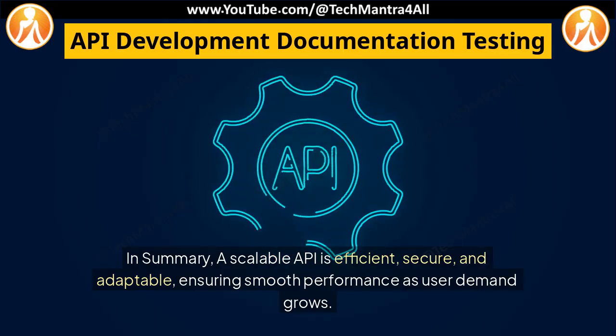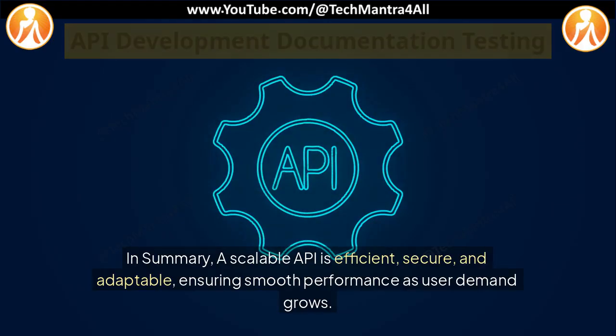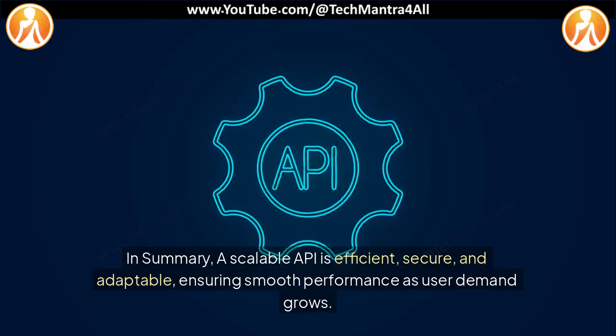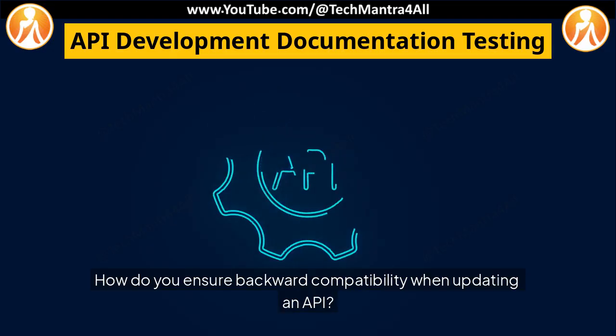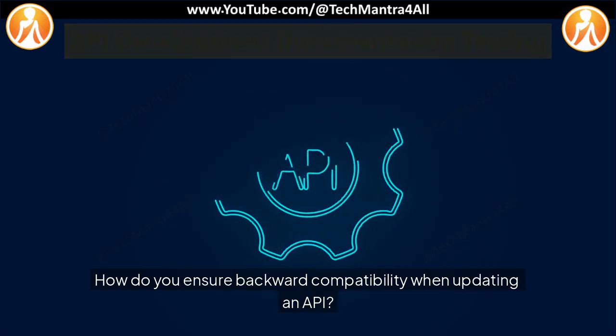In summary, a scalable API is efficient, secure, and adaptable, ensuring smooth performance as user demand grows.